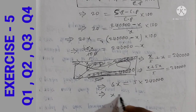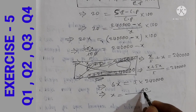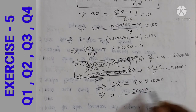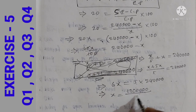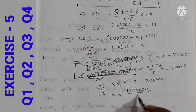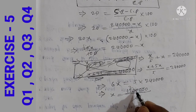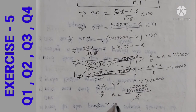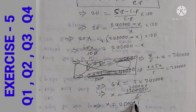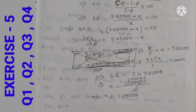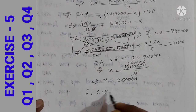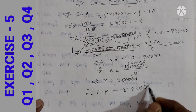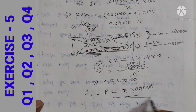So x = 5 multiplied by 2,40,000 divided by 6. Calculating: 5 into 2,40,000 = 12,00,000, divided by 6 = 2,00,000. Therefore, the cost price of the plot is Rs. 2,00,000.